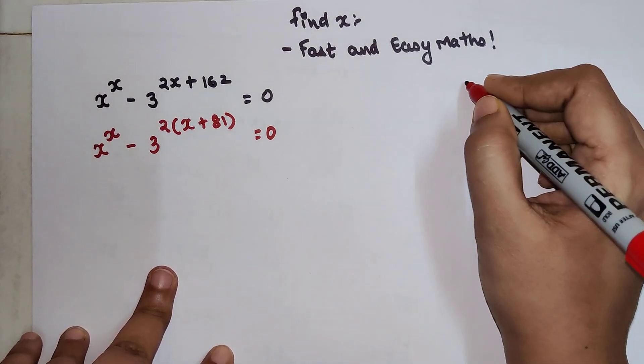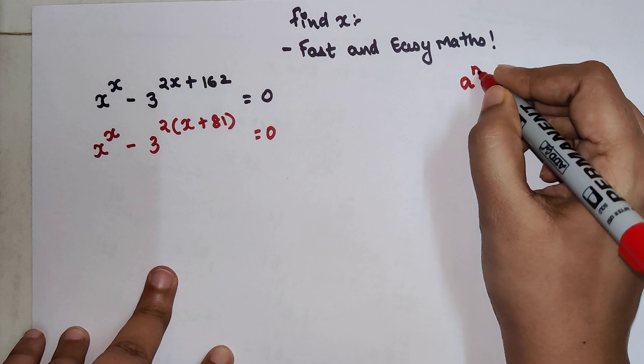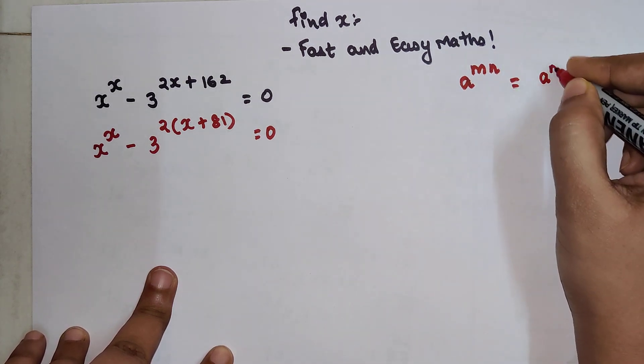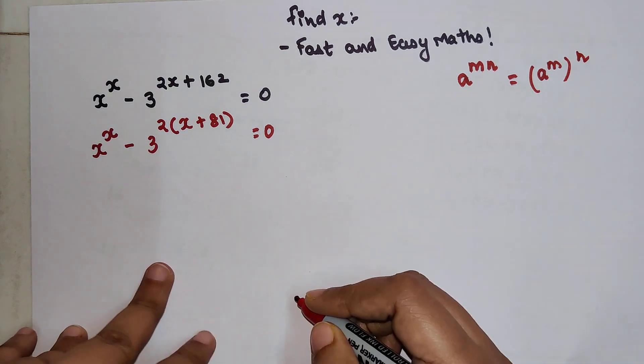Now please understand, whenever you have a raised to m times n, you can write this as a raised to m, the whole raised to n.